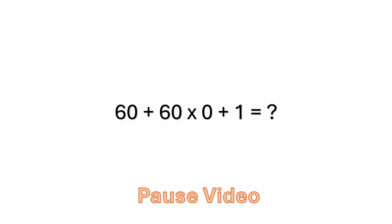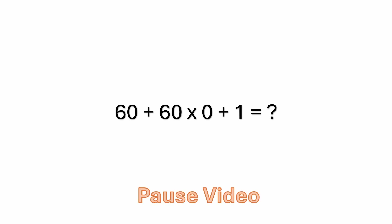Hello everyone and welcome back to the math puzzle crash course. We have a simple mixed operations problem with multiplication and addition. The problem is 60 plus 6 times zero plus one equals. If you'd like to, you could pause the video at this point and we will come back and work it out together.